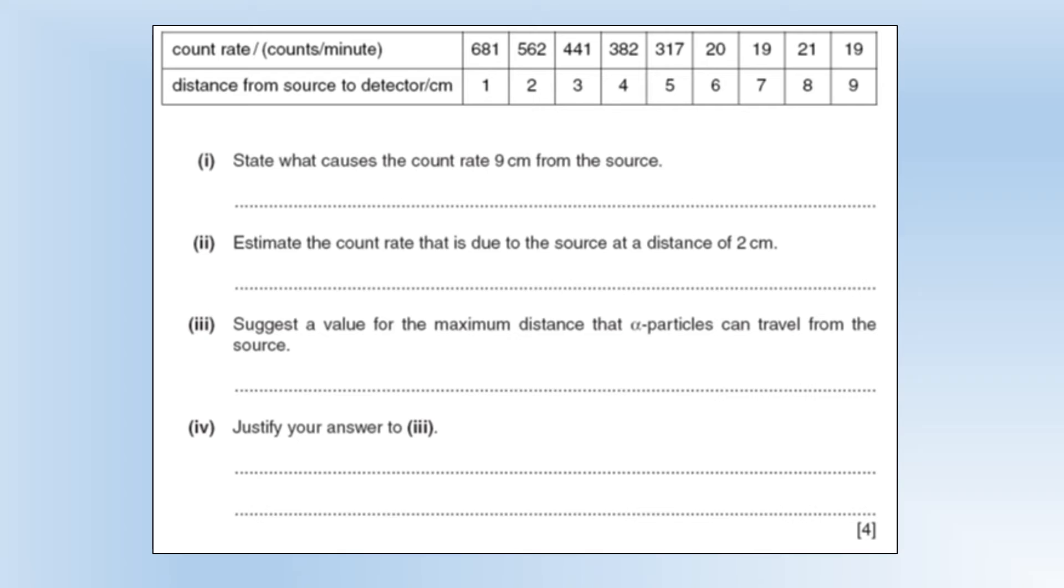nine centimetres from the source. Well, we can see at seven, eight, and nine, the count rate stays pretty much the same, certainly within experimental uncertainty anyway. So we can see that that's going to be background radiation.